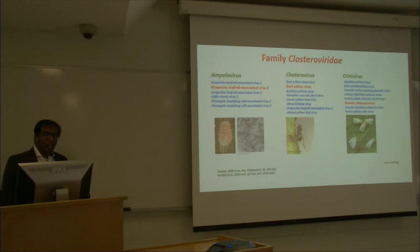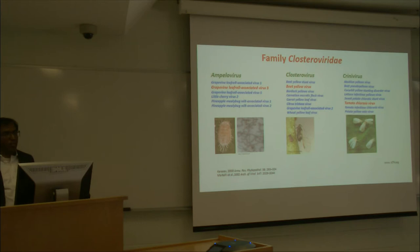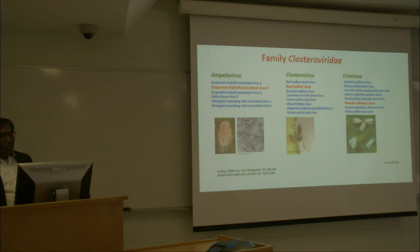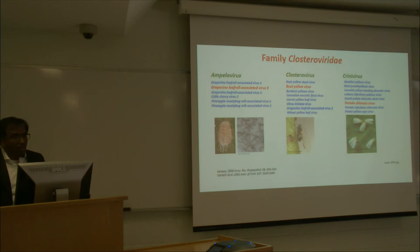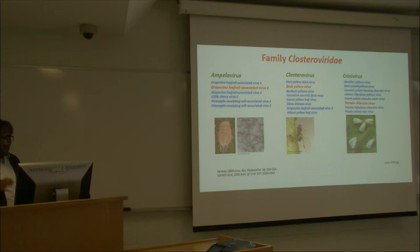I have two case studies here: one is an RNA virus in the family Closteroviridae, and another is a DNA virus in the family Geminiviridae — grapevine red blotch virus. As you can see here, this is the classification of the family Closteroviridae. The species highlighted in red are the type species in each genus. The three genera, as you can see here, are Ampelovirus, Closterovirus, and Crinivirus — for example, grapevine leafroll-associated virus 3, beet yellows virus, and tomato chlorosis virus.